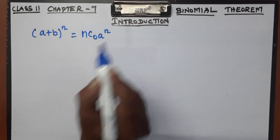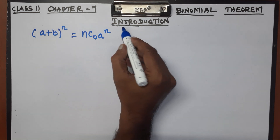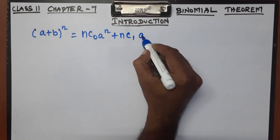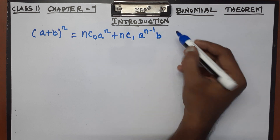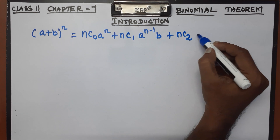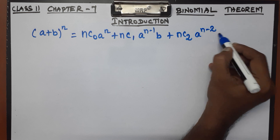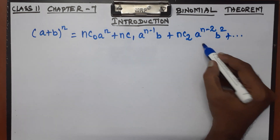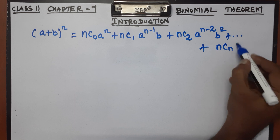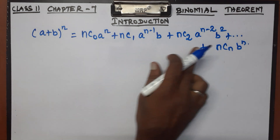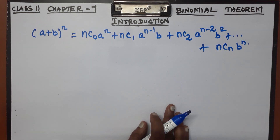The Binomial expansion formula is: nC0 · a^n + nC1 · a^(n-1) · b + nC2 · a^(n-2) · b² + ... up to the last term nCn · b^n. This is the binomial expansion.